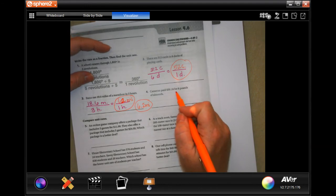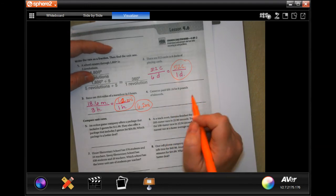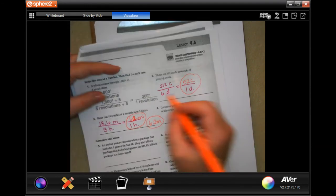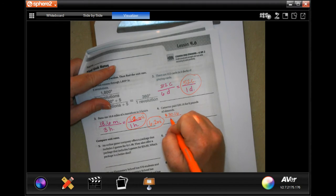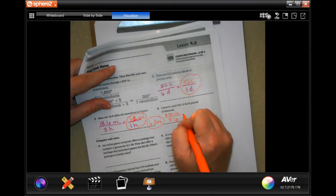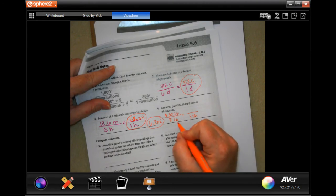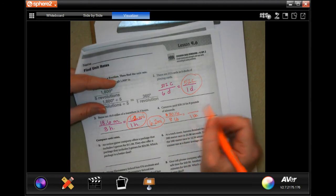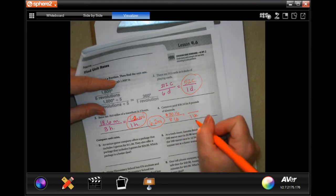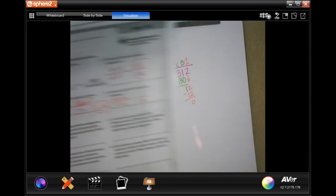Cameron paid $30.16 for 8 pounds of almonds. LB also means pound. So in order to get from 8 to 1, I need to divide by 8. So I'm going to go up to 30.16 and divide that by 8.